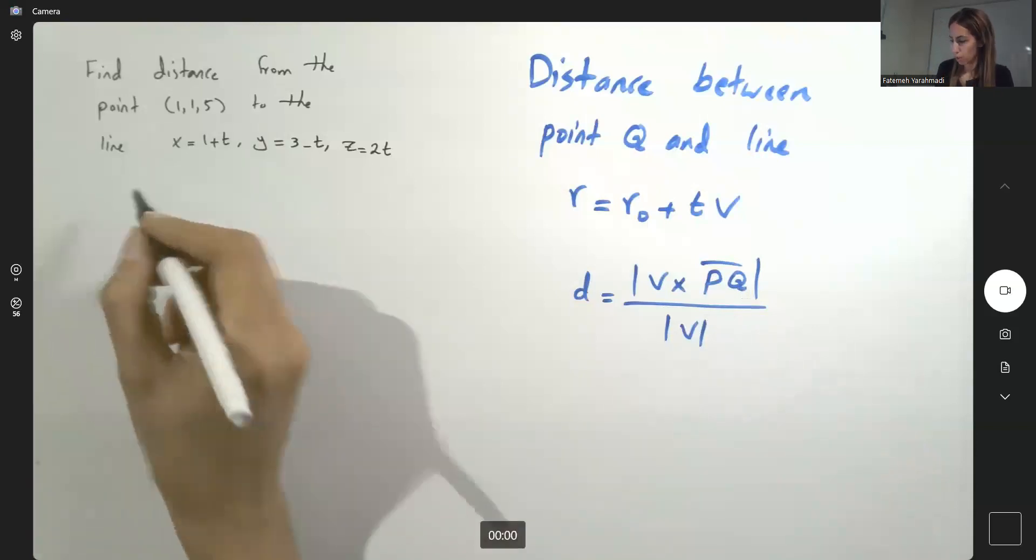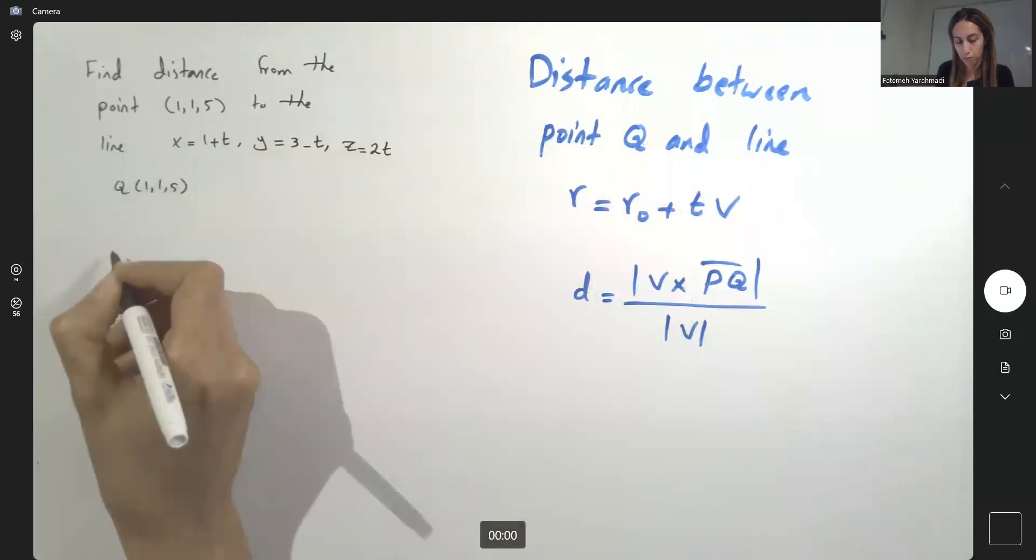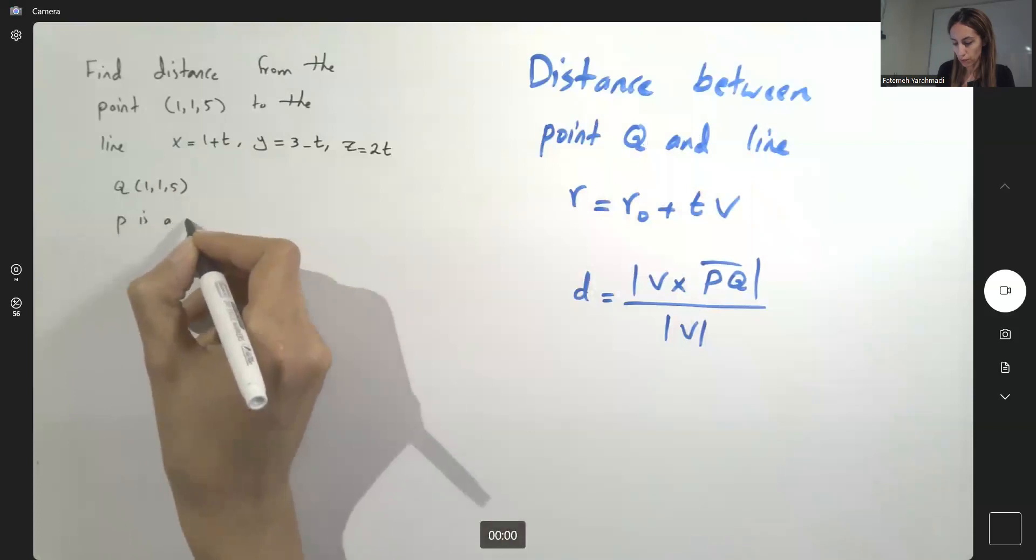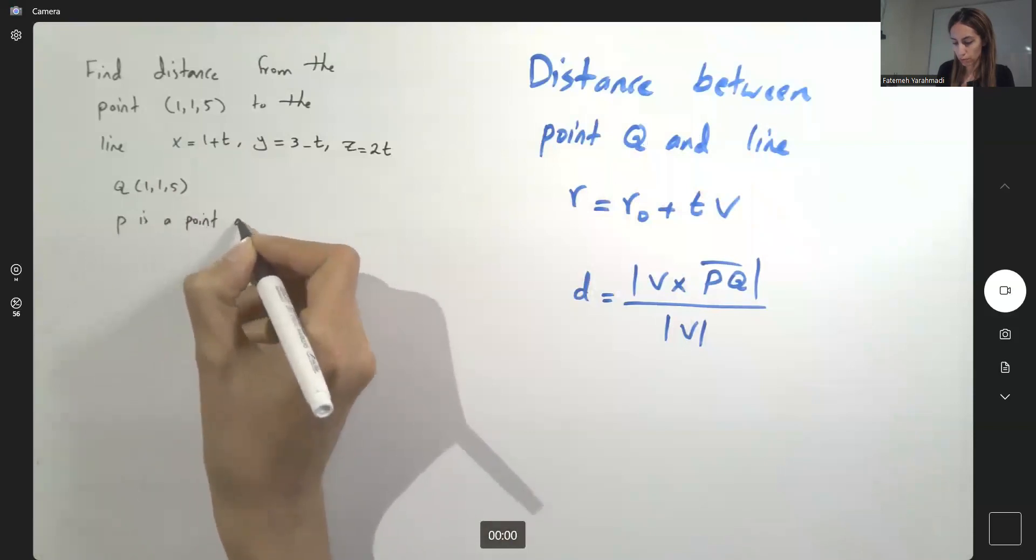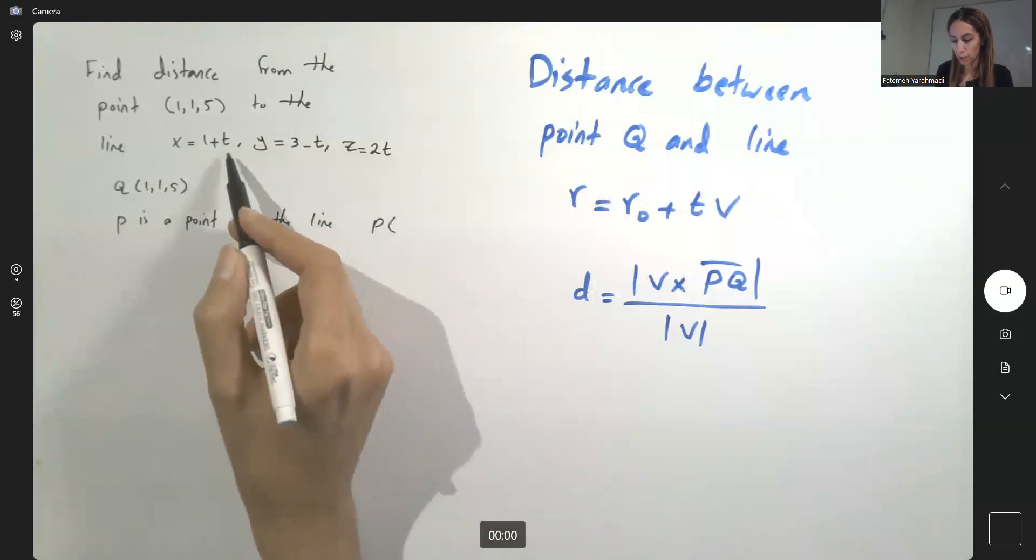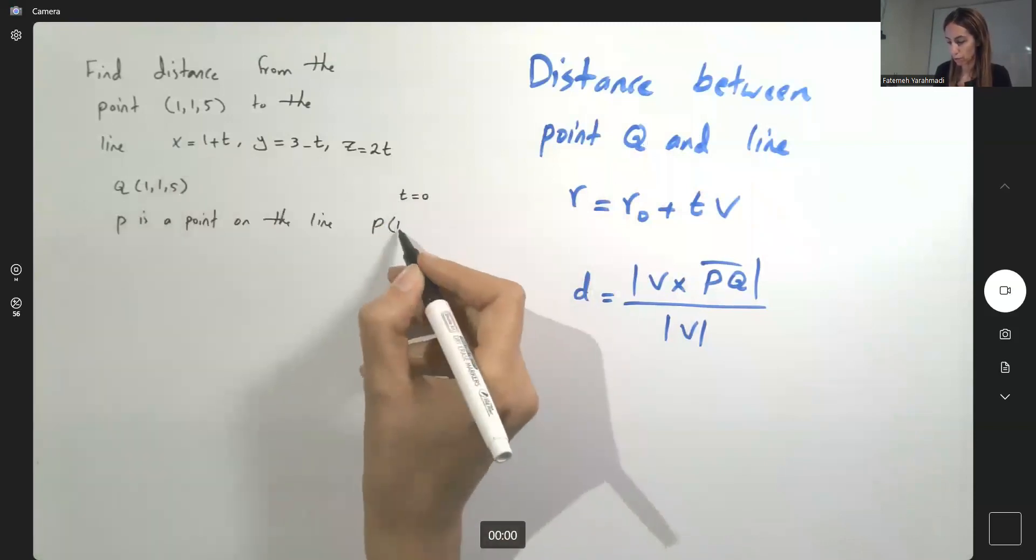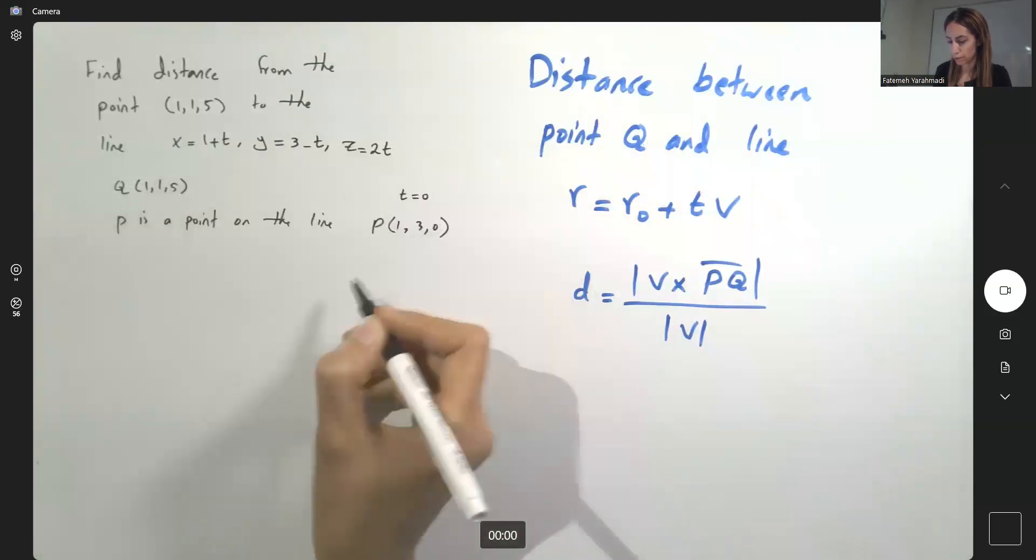So in this scenario Q is going to be 1, 1, 5. P is a point on the line. So for simplicity we can set T equal to 0 and then you have 1, 3 and 0 on the line.